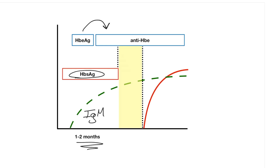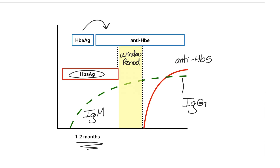Later on, the body enters what we call a window period, where the surface antigen is no longer detectable in the blood. This is because antibodies — particularly surface antibodies — are being formed against the surface antigen in order to fight off the infection. These antigen-antibody complexes are not detectable in the blood, but when the window period ends you can later detect the antibodies against the surface antigen. The IgM core antibodies also later convert into IgG antibodies.